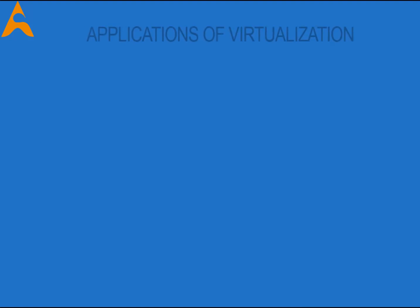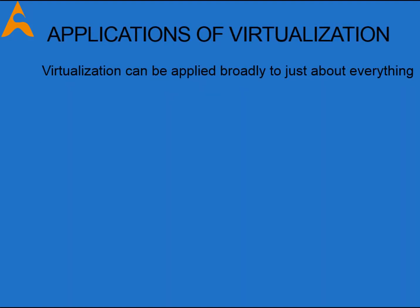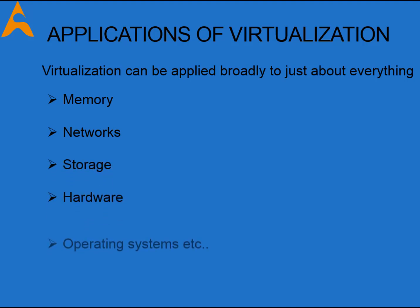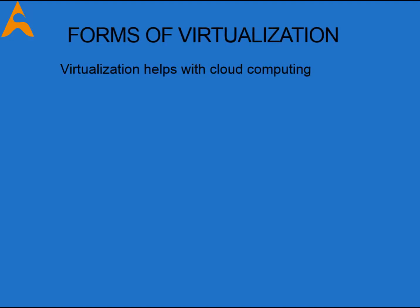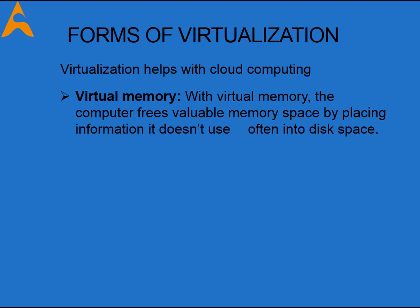Applications of virtualization: virtualization can be applied broadly to just about everything — memory, networks, storage, hardware, operating systems, and applications. What makes virtualization so important for the cloud is that it decouples the software from the hardware. Decoupling means that software is put in a separate container so that it's isolated from the operating system. To understand how virtualization helps with cloud computing, you must understand its many forms. In all cases, a resource emulates or imitates another resource. For example, with virtual memory, the computer frees valuable memory space by placing information it doesn't use often into disk space.